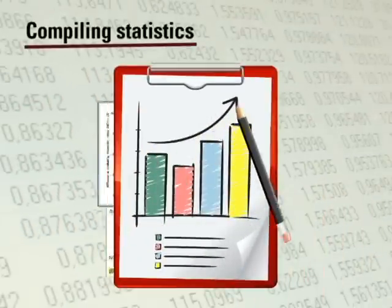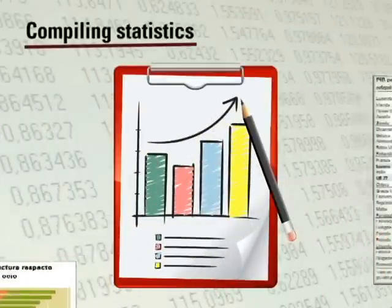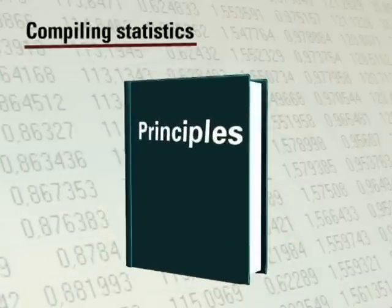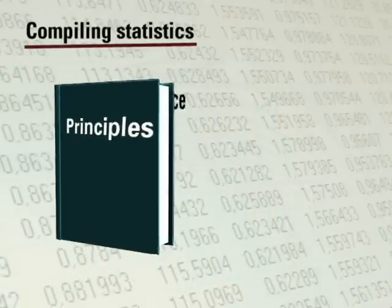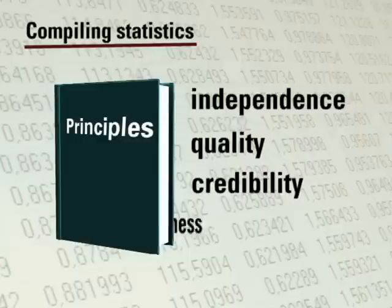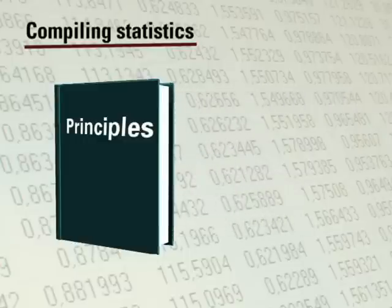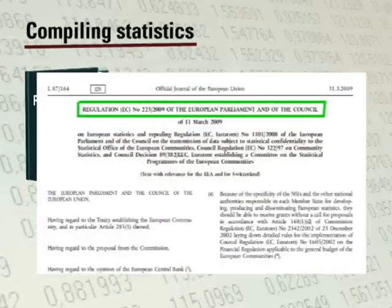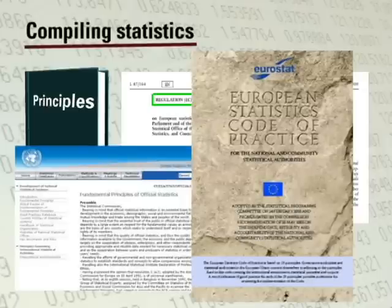It is important to highlight that the compiling of official statistics in the European Statistical System is governed by a series of principles that ensure independence, quality, credibility, and usefulness of studies conducted and of data published. These principles are also regulated by European legislation and also appear in the European Statistics Code of Good Practice.